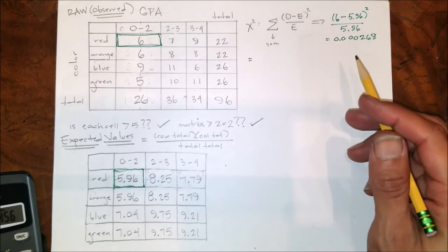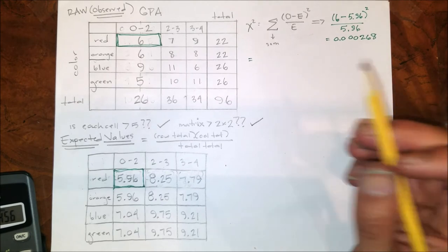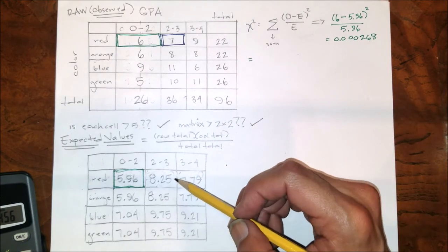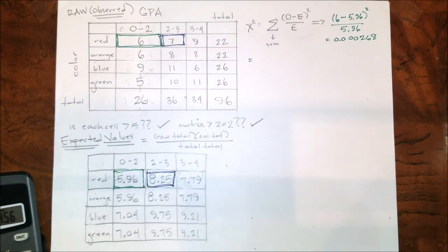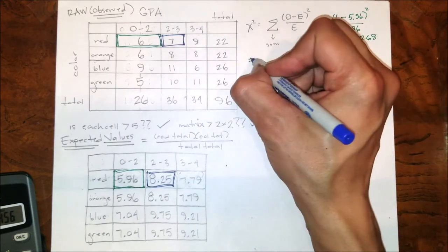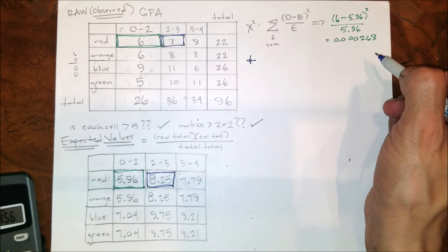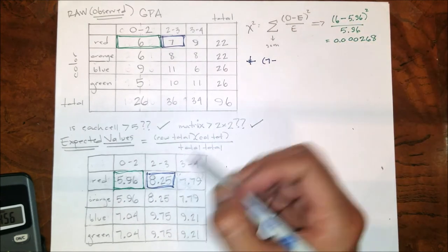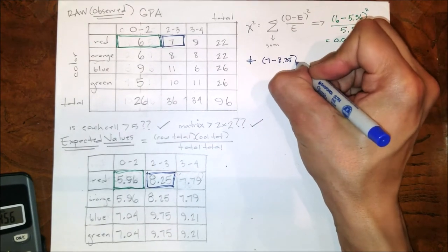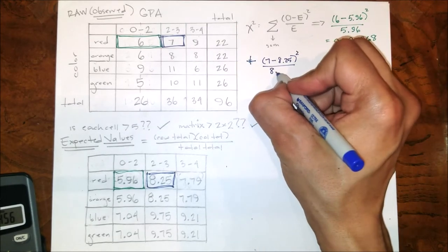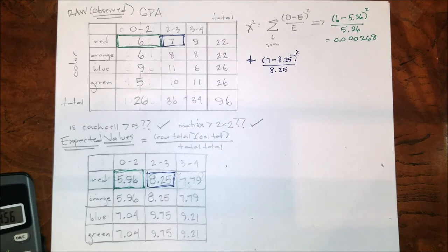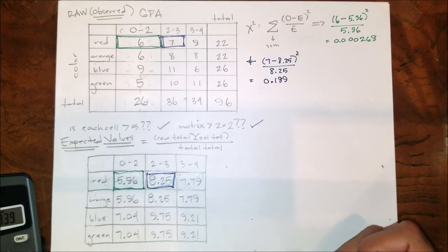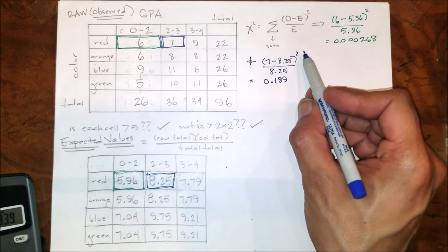Now I continue on to the next. This cell I will now use this operation with its corresponding partner. So adding all of these things together: observed 7 minus expected 8.25, quantity squared, all over expected 8.25. That equals. Notice this is going to result in a negative number, but you're squaring it. All of these numbers should be positive.